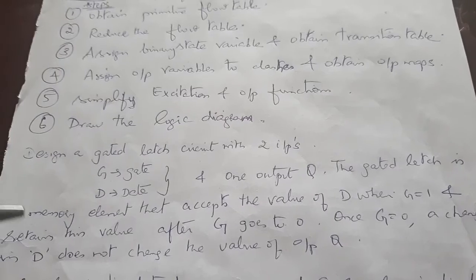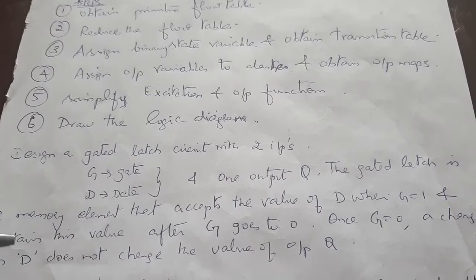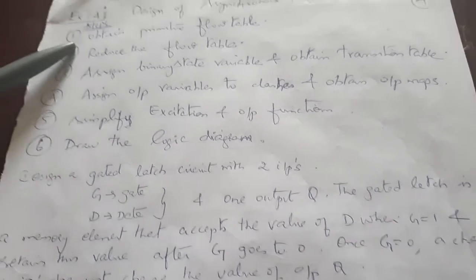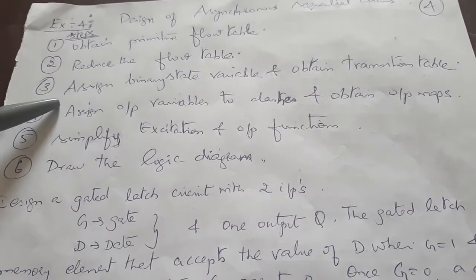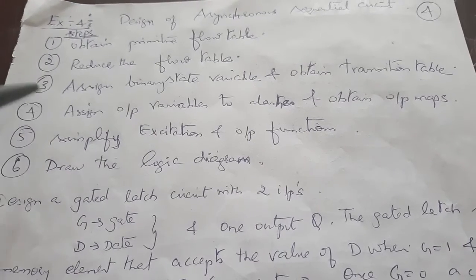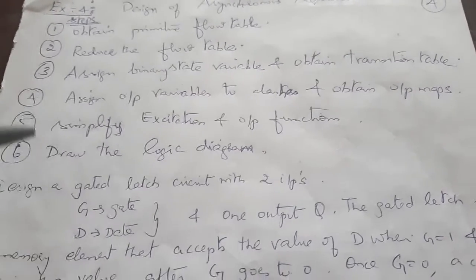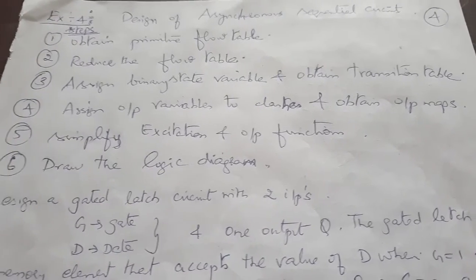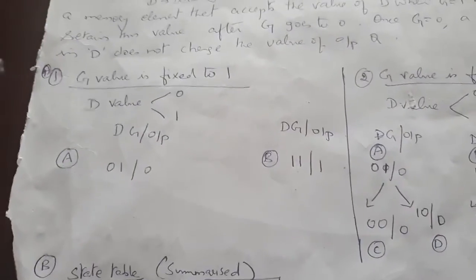This is the problem statement for the pulse mode operation of an asynchronous sequential circuit. The steps to be followed are: obtain the primitive flow table, reduce the flow table, assign the binary state table, obtain the transition table using K-maps, get the synthesized equation or state equation, and finally draw the logical diagram.